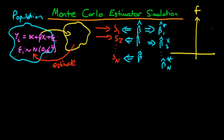If we plot the frequency of each of the different values of beta obtained from using our estimator on each of those samples, we will get a distribution of estimates. We've spoken about the fact that this sampling distribution should have certain desirable properties for a good estimator. One of those is that the expectation of beta hat, our estimator, is actually beta — meaning we have an unbiased estimator — represented by the sampling distribution being centered around the true population parameter beta.